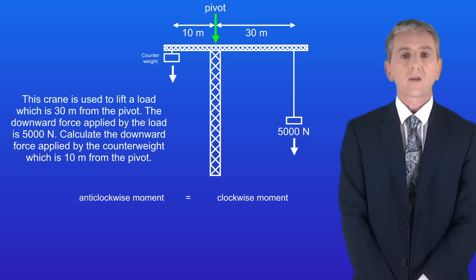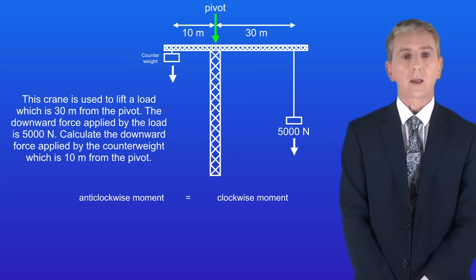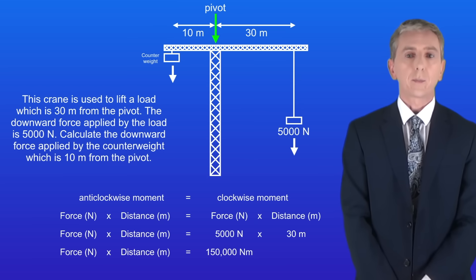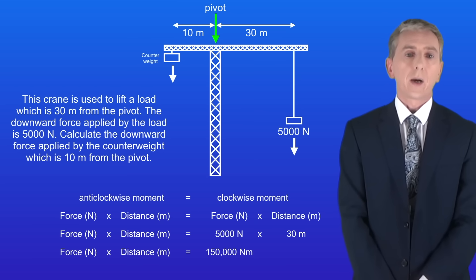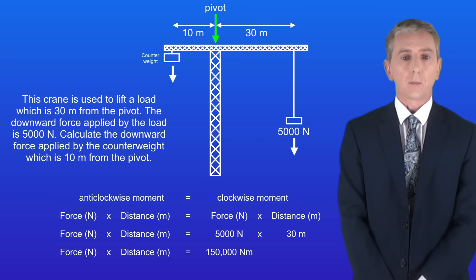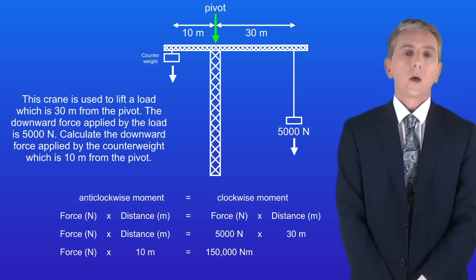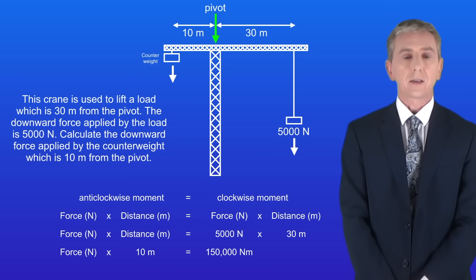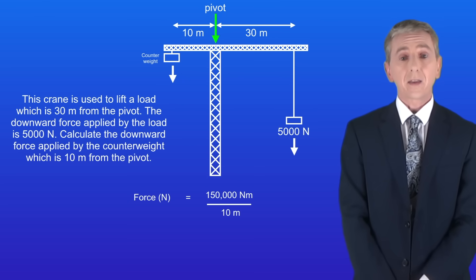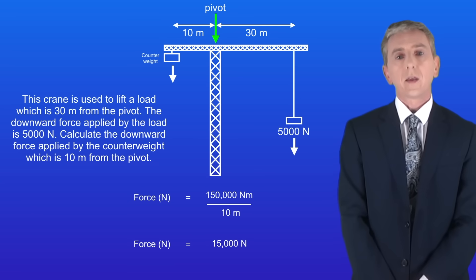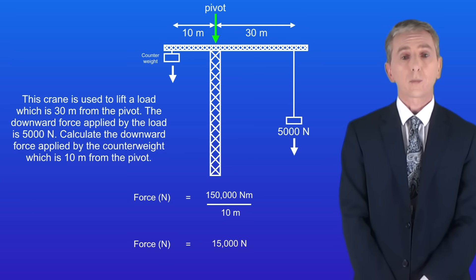We can see that the moments are balanced — the clockwise moment due to the load equals the anti-clockwise moment due to the counterweight. We calculate the clockwise moment by multiplying the force of 5000 newtons by the distance of 30 meters, giving a clockwise moment of 150,000 newton meters. Because the moments are balanced, the anti-clockwise moment must also be 150,000 newton meters. With the counterweight 10 meters from the pivot, we divide 150,000 by 10 to get a force of 15,000 newtons for the counterweight.